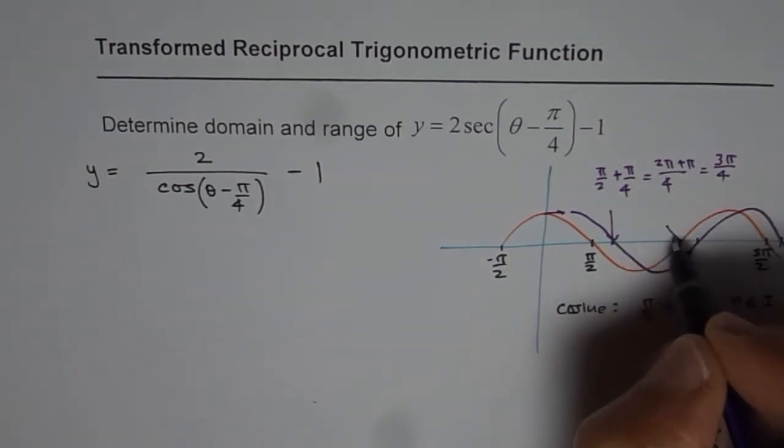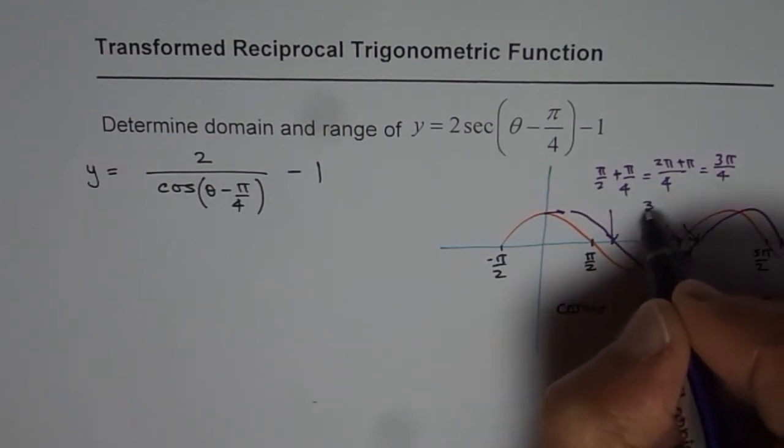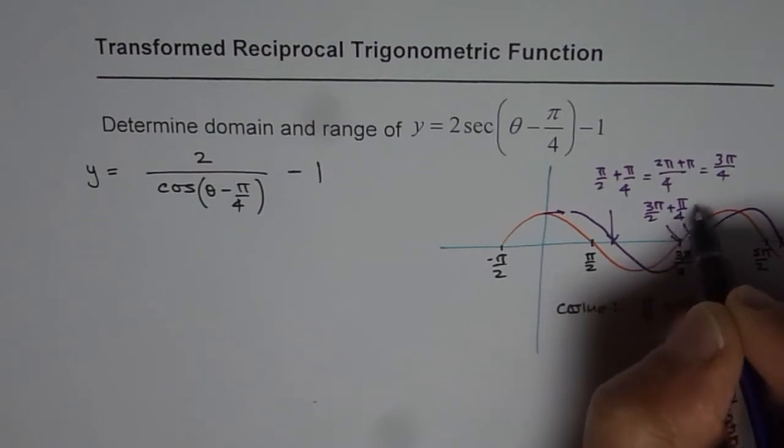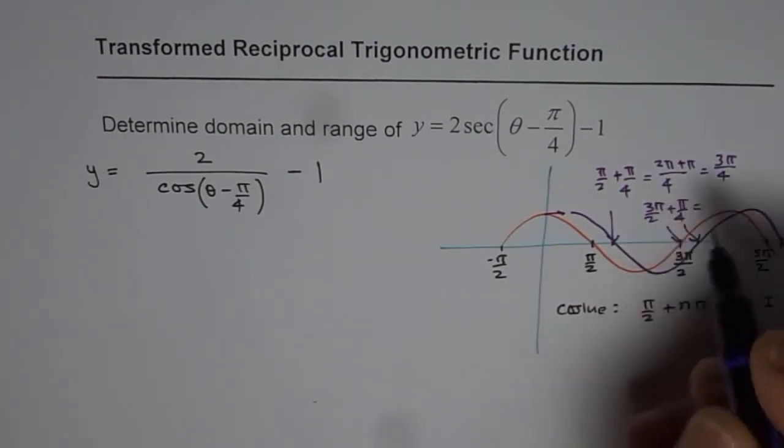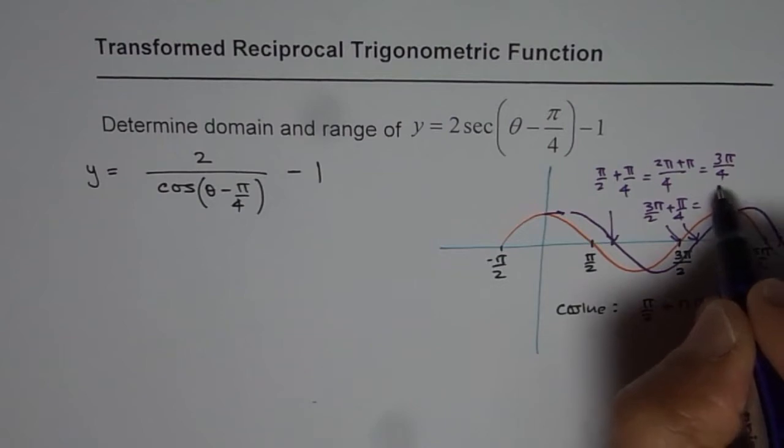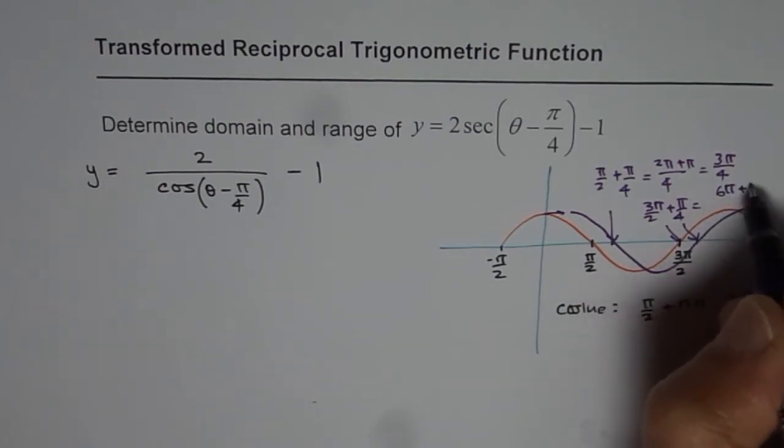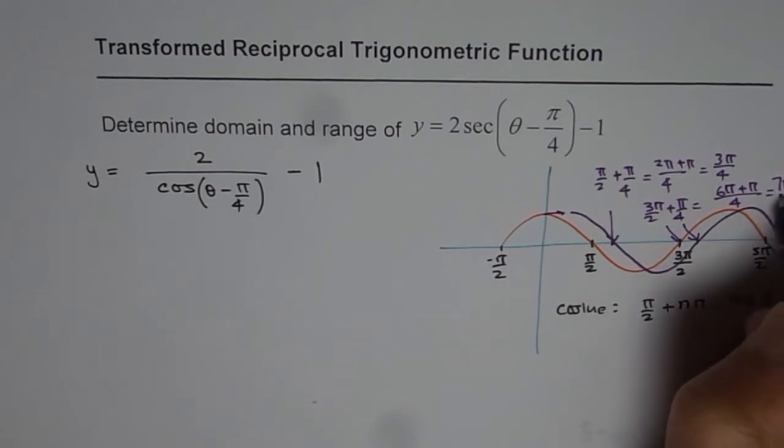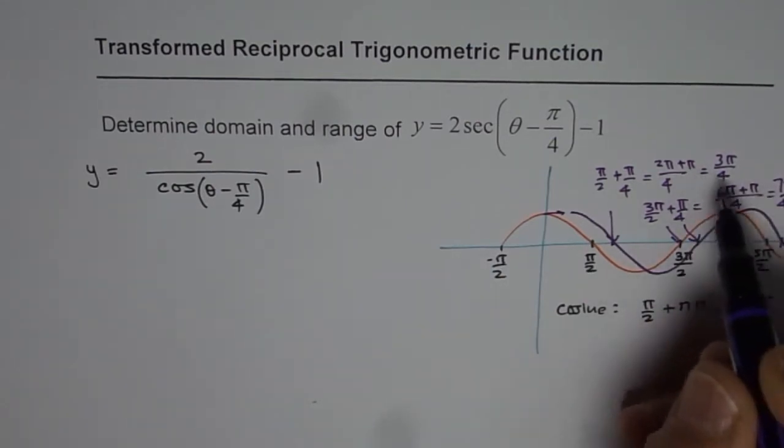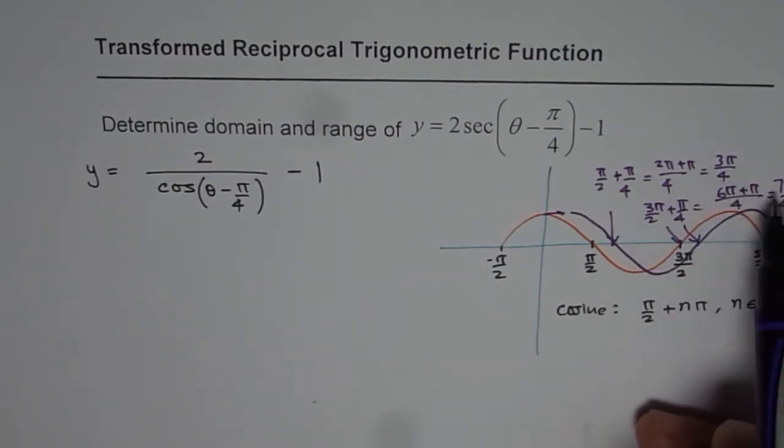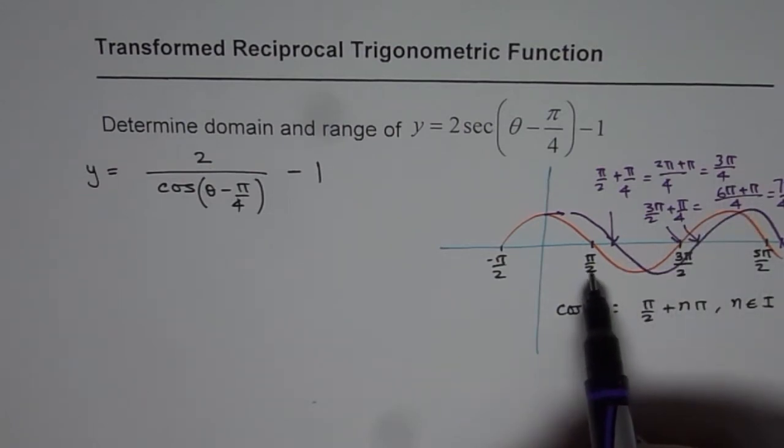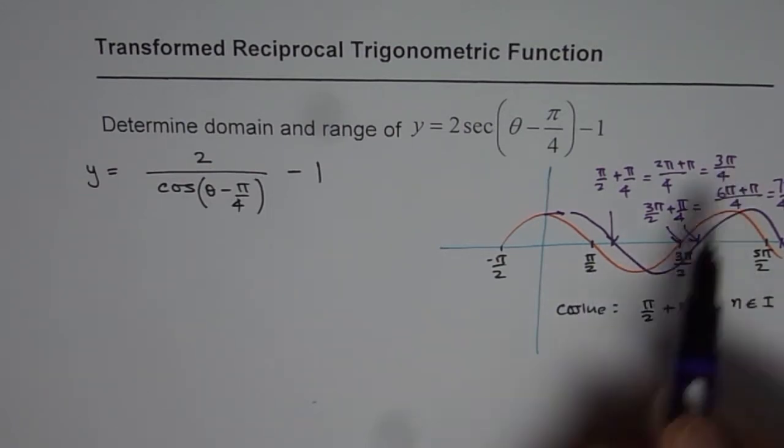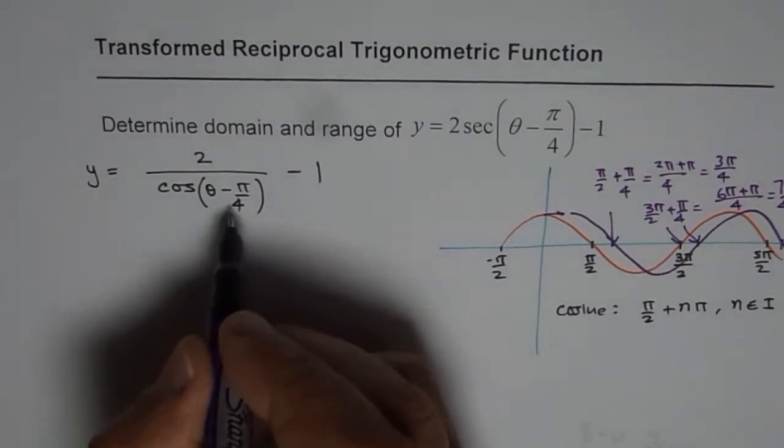The second zero, which was here, will now move to 3 pi by 2 plus pi by 4, which will be 6 pi plus pi by 4, which is 7 pi by 4. So what we now notice is that the zeros have moved from initial position of pi by 2 to 3 pi by 4 since we have a horizontal translation here.